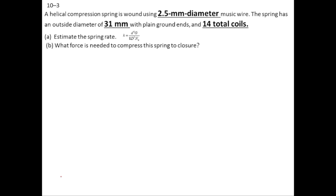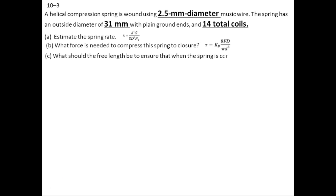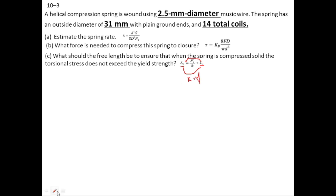In part B, we are required to find the solid force, which will close the spring so all coils touch each other with no gap between consecutive coils. We use the formula with Kb and replace F by Fs and tau by Ssy, where Ssy is the torsional shear yield strength and Fs is the solid force. In part C, we find the spring length using F = kx, where the difference between L0 and Ls equals the deflection x.